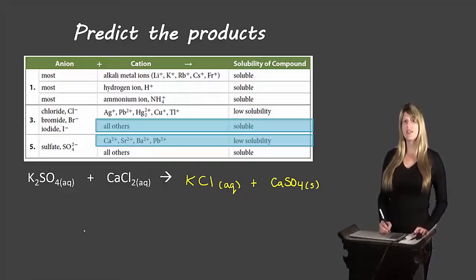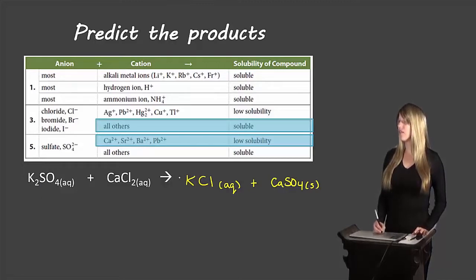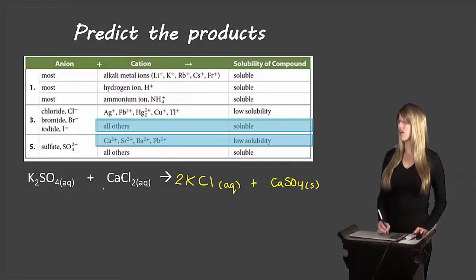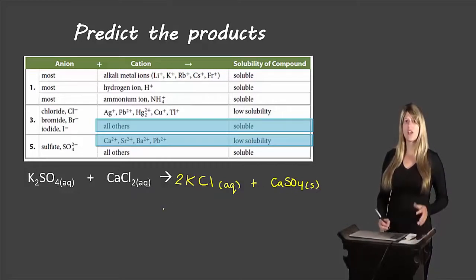Now to balance the equation: we have two potassium on the left and one on the right, so we write a coefficient of two for potassium chloride. That gives us two chlorine on the right, matching two chlorine on the left. We have one calcium on each side and one sulfate on each side. So we're all balanced out.